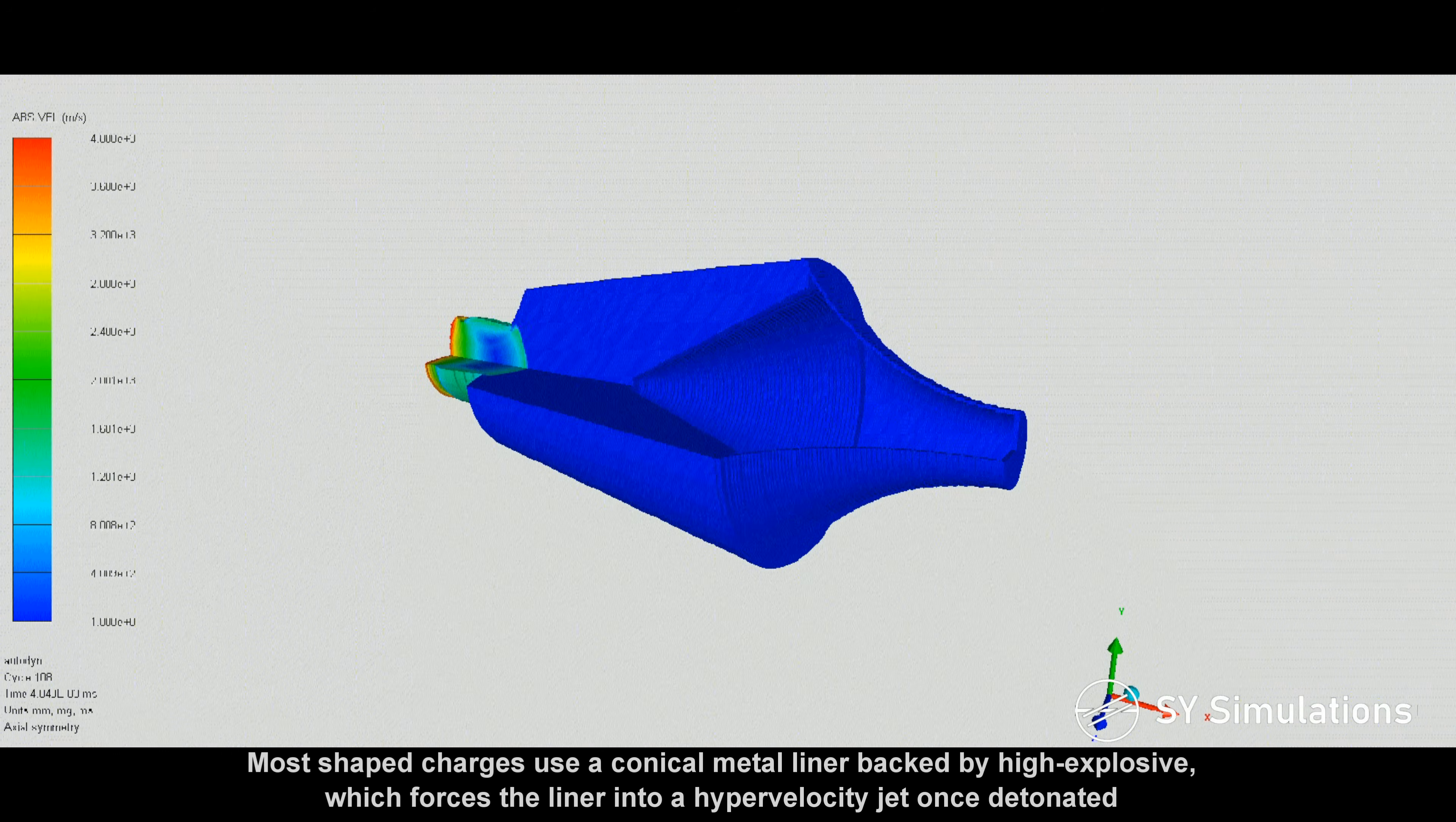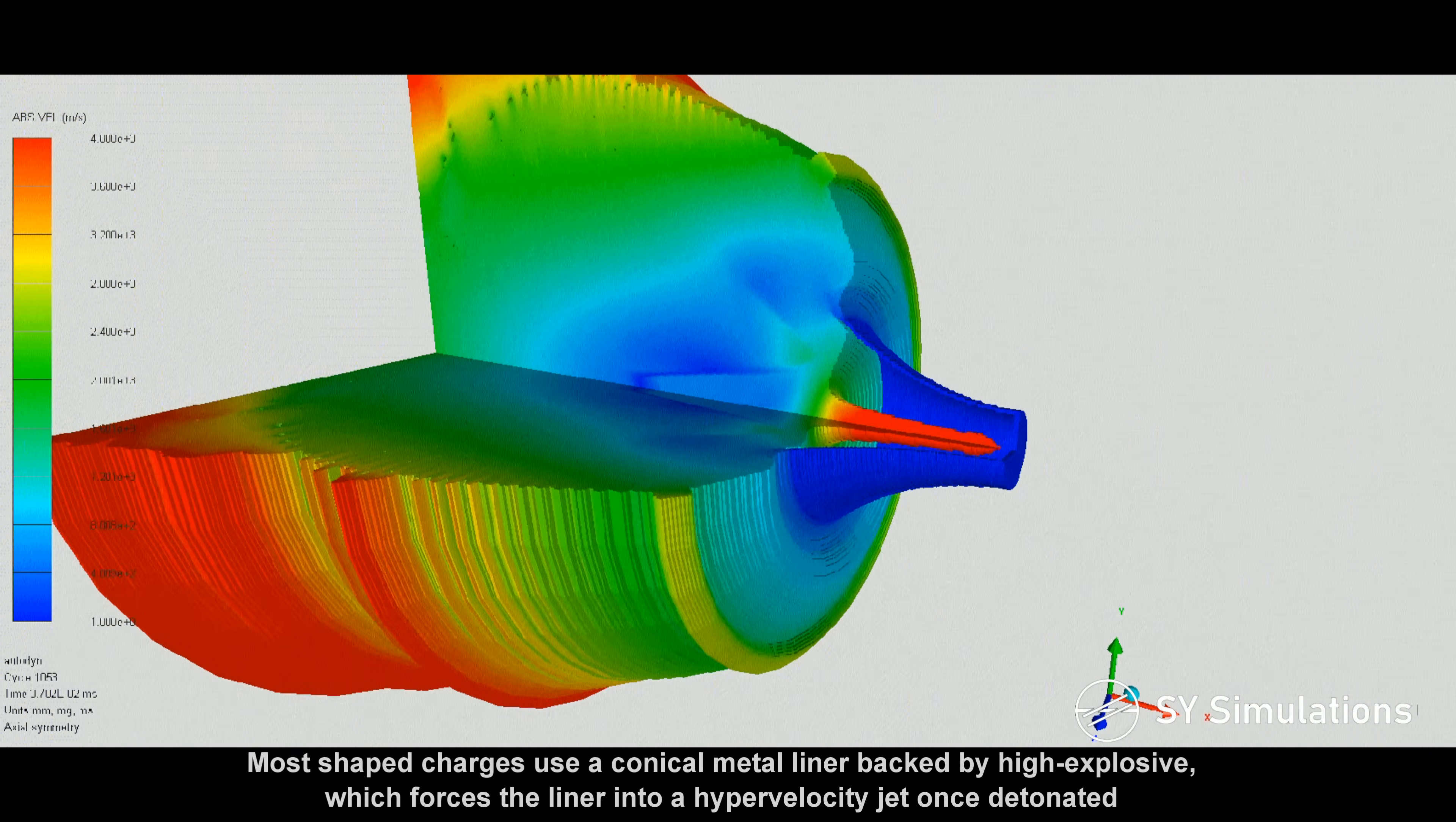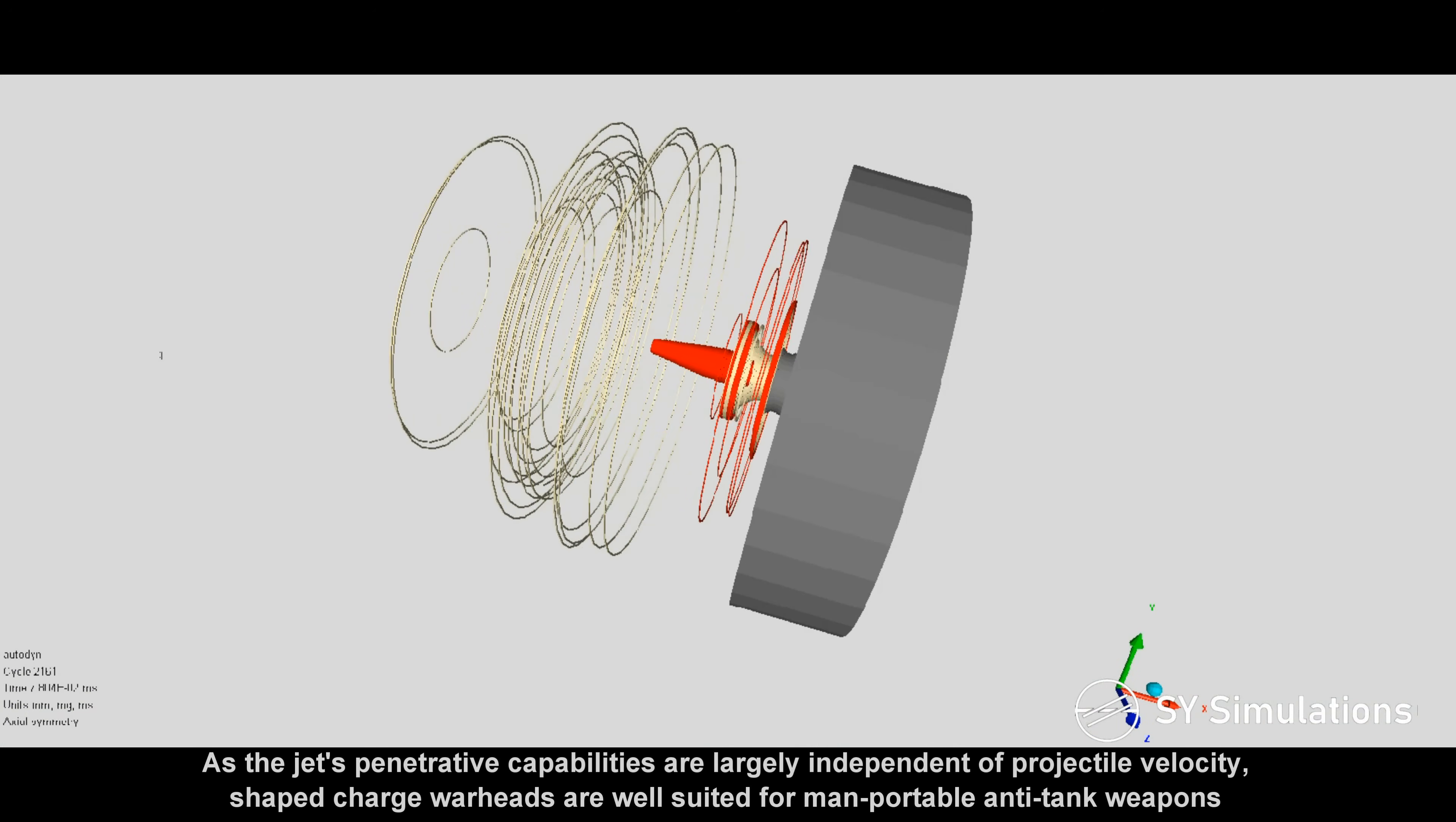Most shaped charges use a conical metal liner backed by high-explosive, which forces the liner into a hypervelocity jet once detonated. As the jet's penetrative capabilities are largely independent of projectile velocity, shaped-charge warheads are well-suited for man-portable anti-tank weapons.